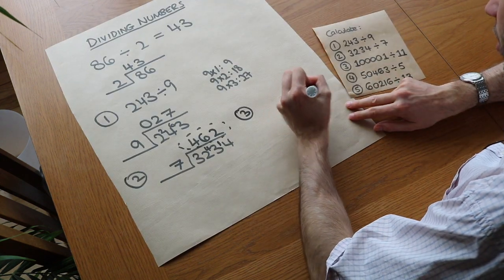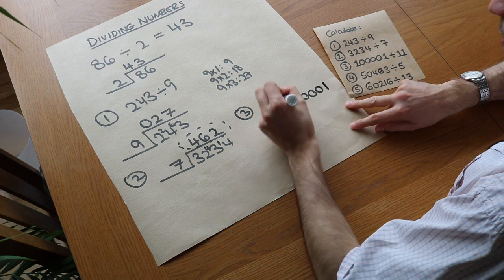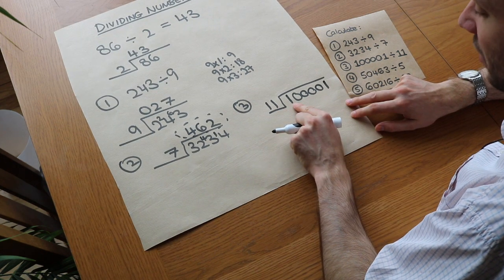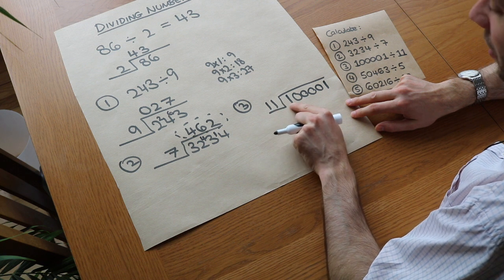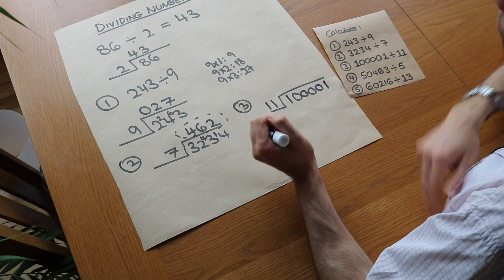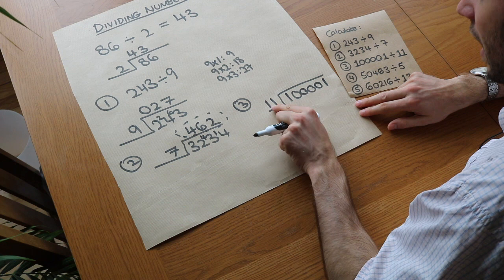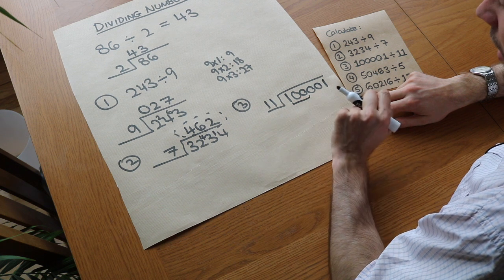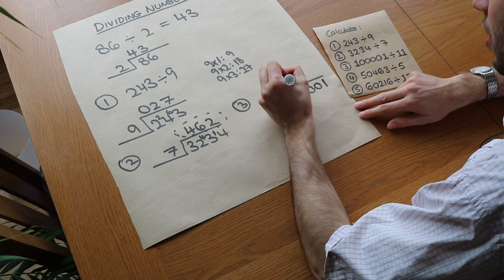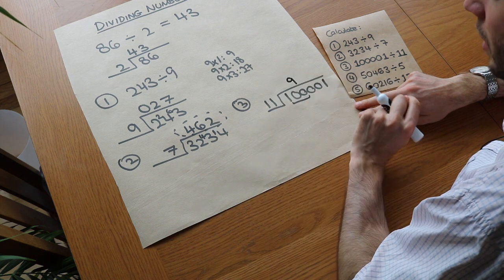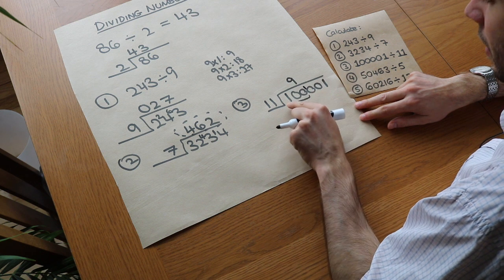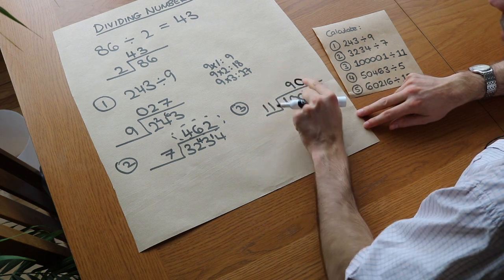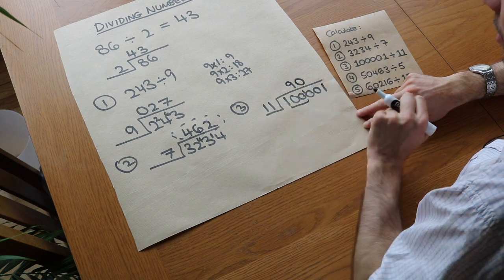Next: 100,001 divided by 11. How many times does 11 go into 1? It doesn't. How many times does 11 go into 10? Still doesn't — if you have 10 sweets divided between 11 people, no one gets one. So we try 11 into 100: the closest multiple of 11 below 100 is 9×11=99, so it goes in 9 times with a remainder of 1. We put that 1 on the next digit. Now 11 into 10: it goes 0 times. We must put the 0 here — we can't skip zeros in the middle.